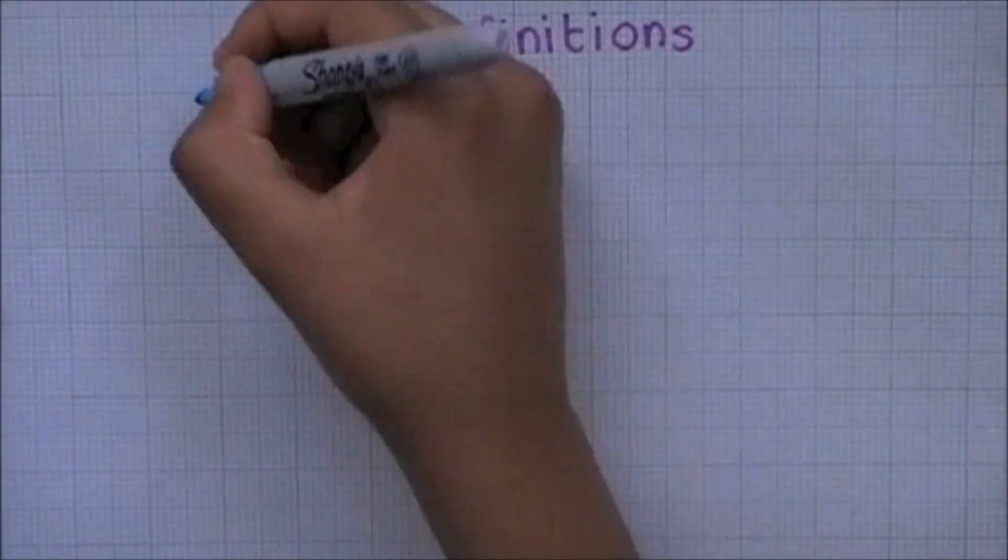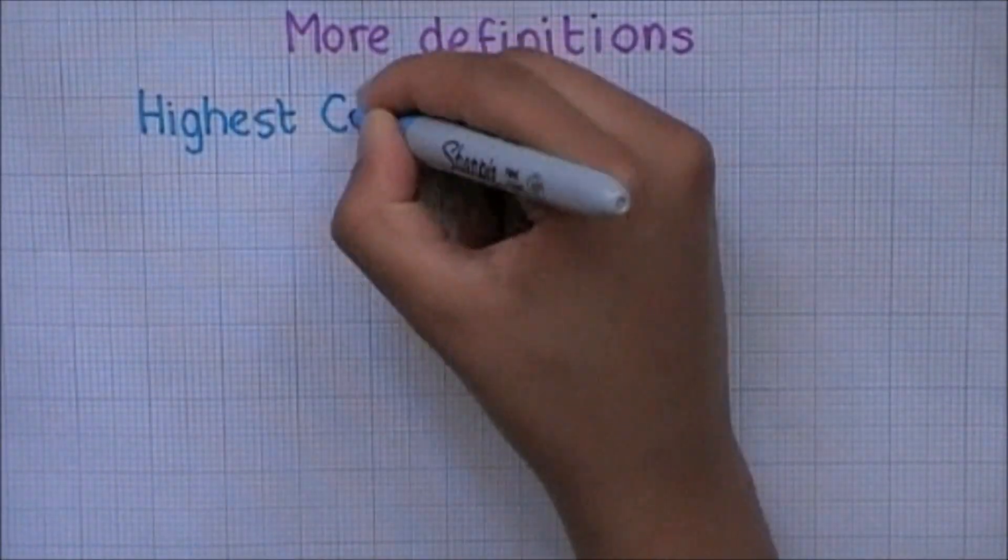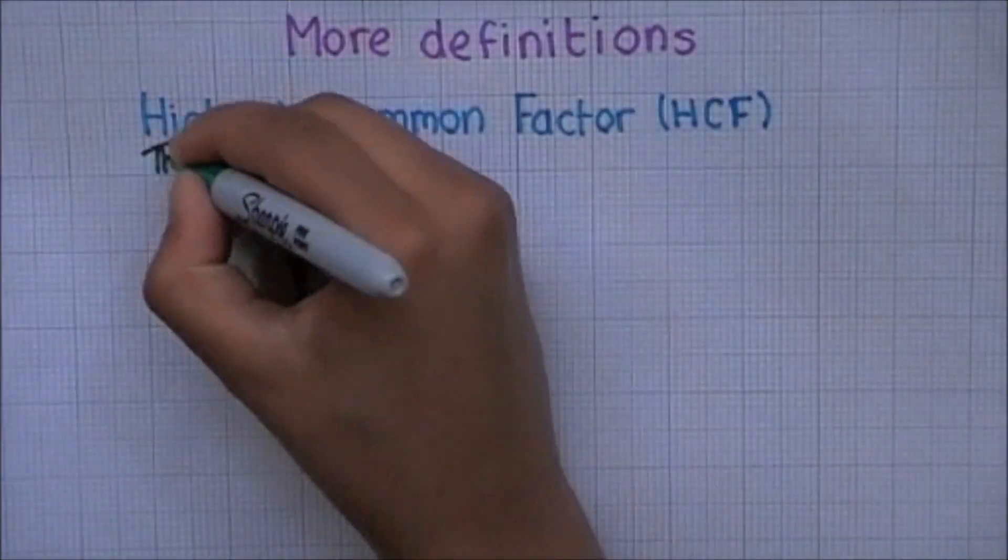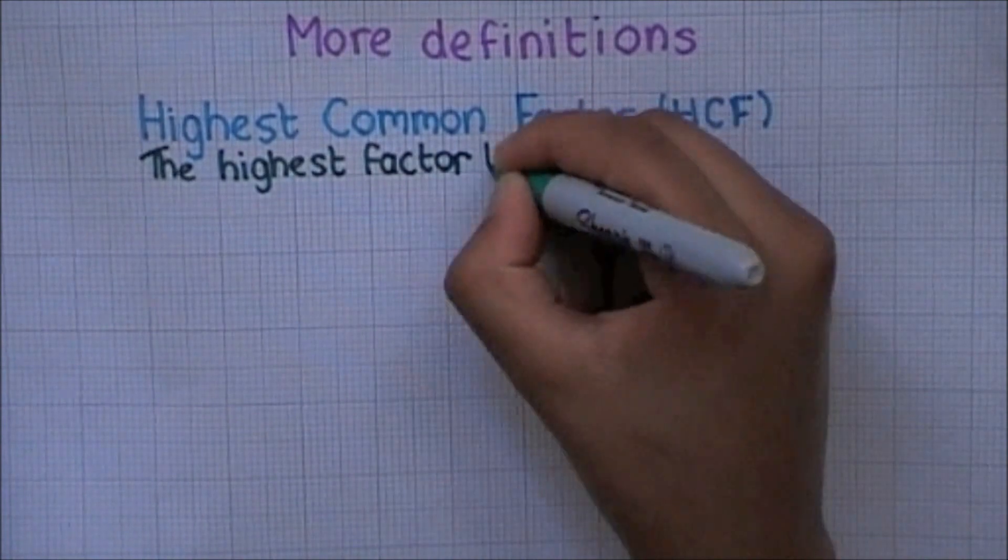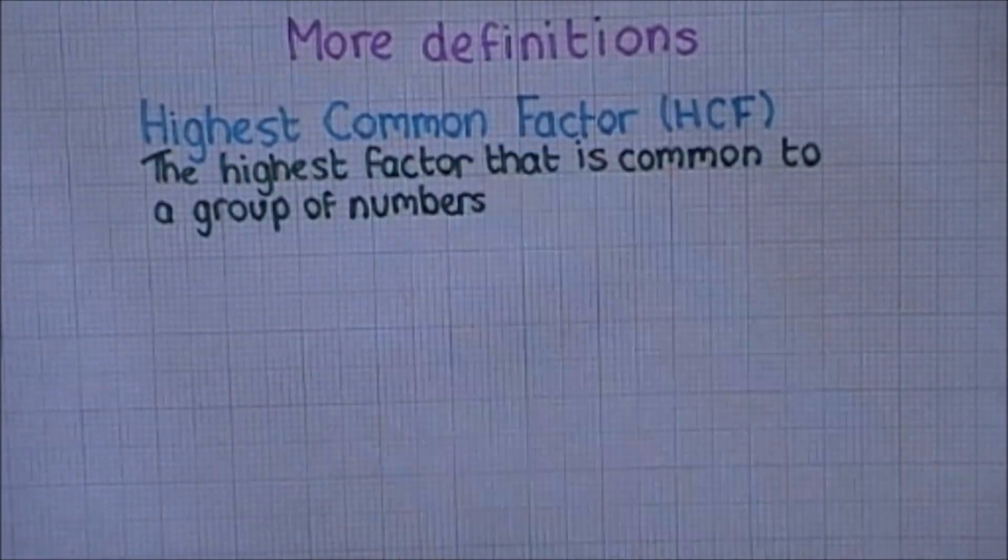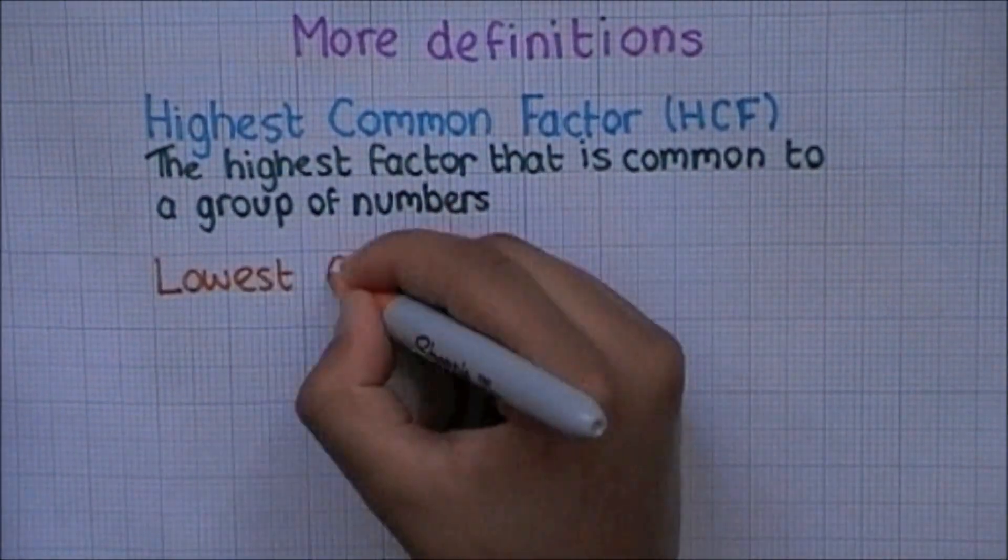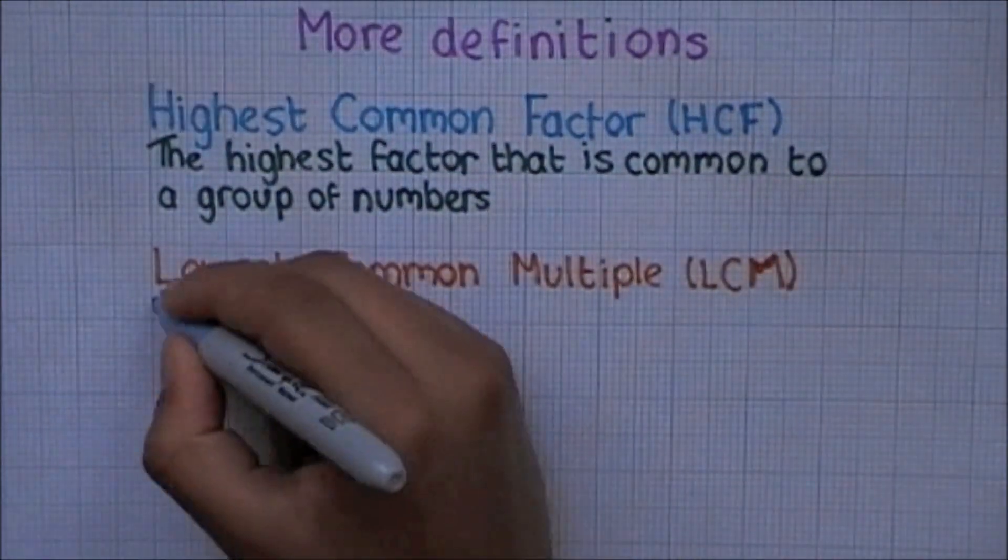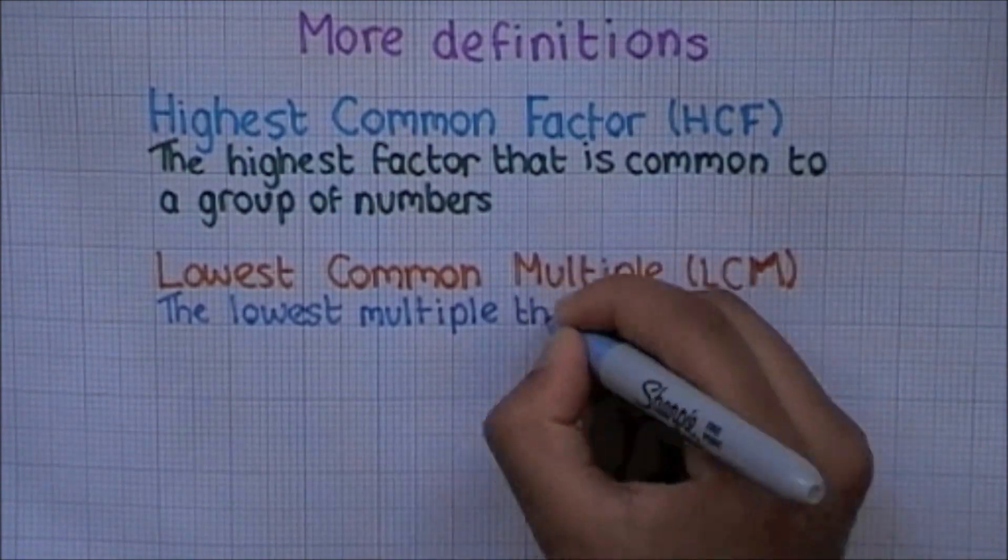Time for a few more definitions. Firstly, there's the highest common factor, which can also be written as HCF. This is the highest factor that is common to a group of numbers. Then there's the lowest common multiple, also written as LCM. This is the lowest multiple that is common to a group of numbers.